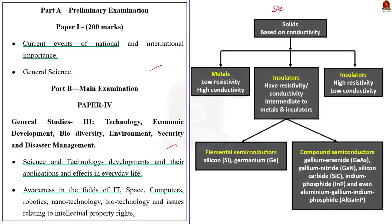What are semiconductors? Based on the conductivity of solids, solids can be classified into three major types. Firstly, metals — they possess very low resistivity, that is high conductivity. The exact opposite to metals is insulators; they have high resistance to the flow of current, which means their ability to conduct electricity is low. Something that is in between these two are the semiconductors. They have a resistivity or conductivity that is intermediate to the metals and insulators.